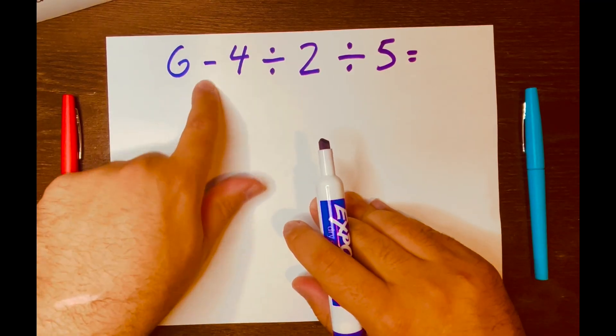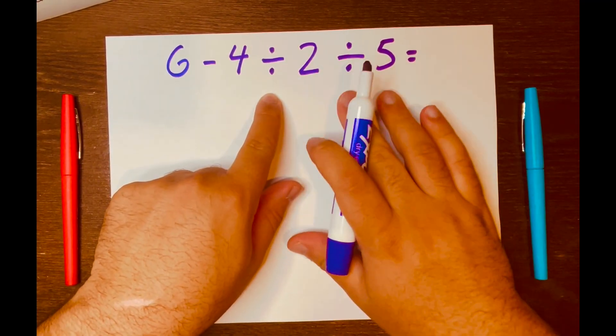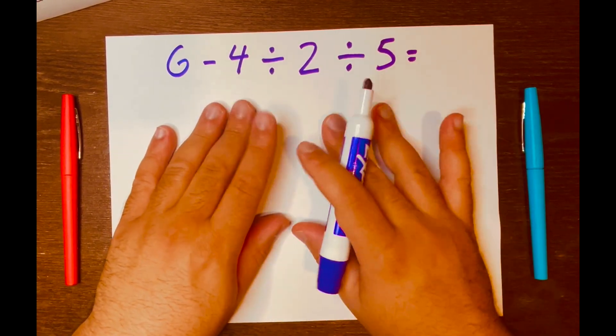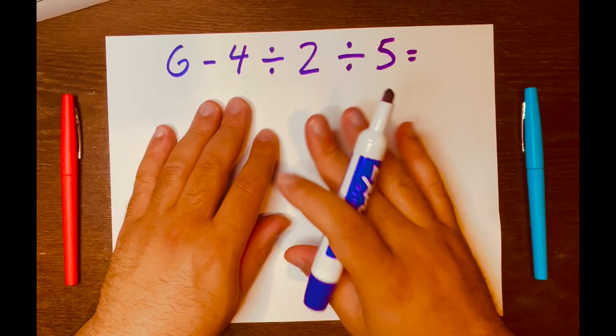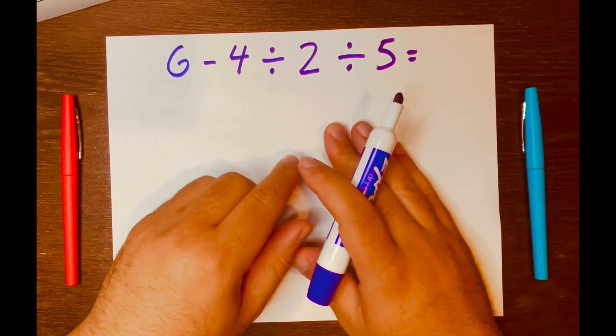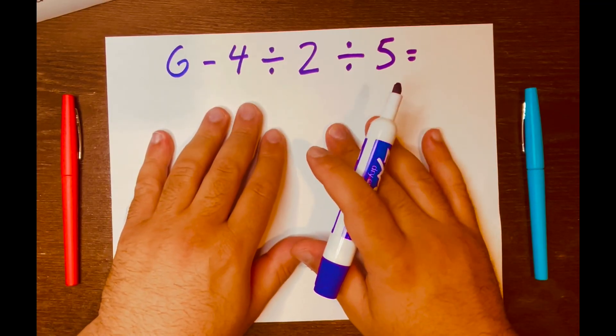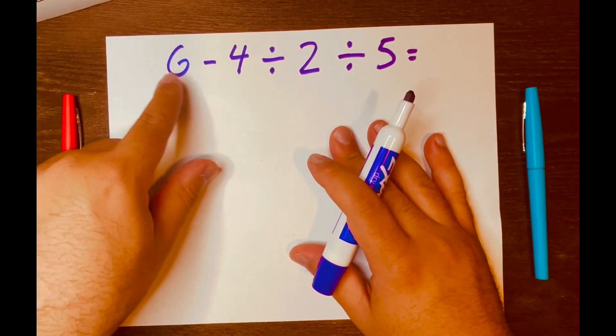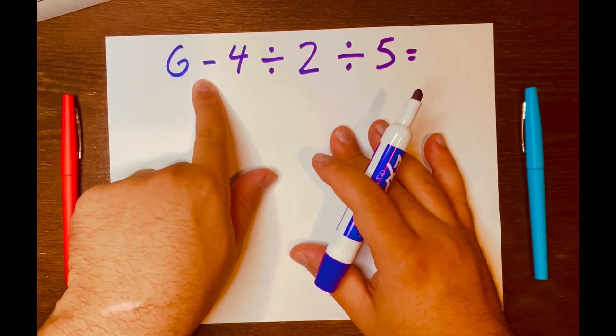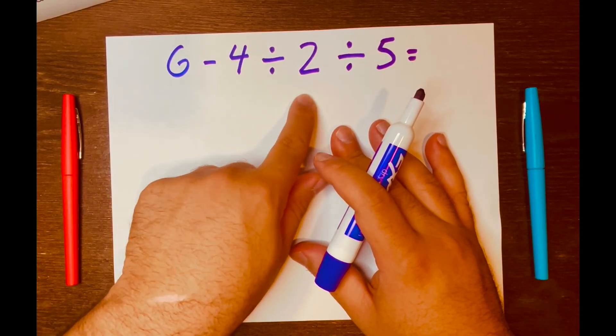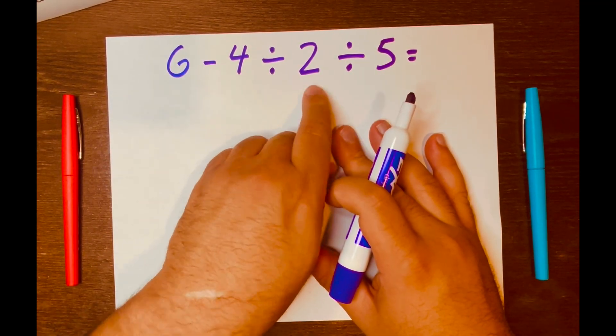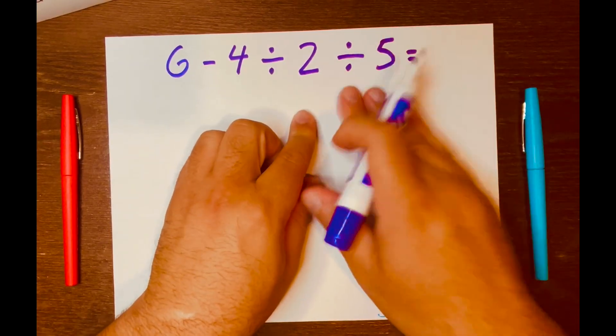We have 6 - 4 ÷ 2 ÷ 5. All right. So to start solving this problem, I'm thinking of PEMDAS because I'm subtracting and dividing. And according to PEMDAS, you read from left to right within its levels. And so 6 - 4 would not go first because division is a higher level than subtraction. So 4 ÷ 2 goes first. And you don't do 2 ÷ 5 first because you read from left to right, not right to left.